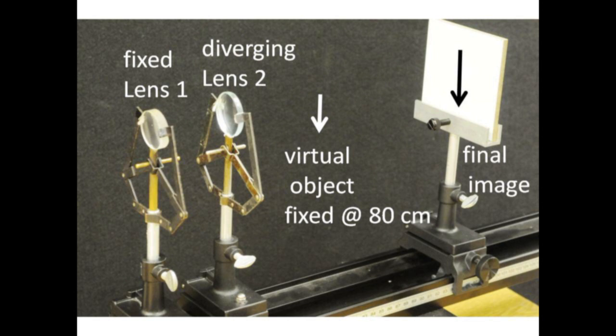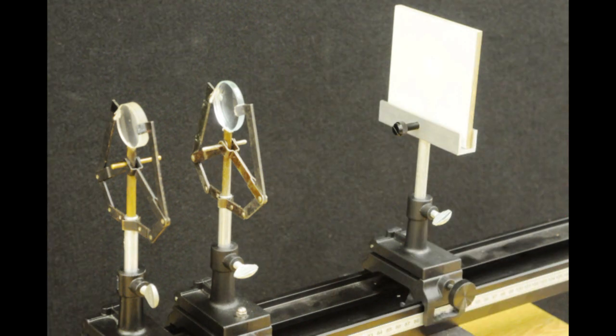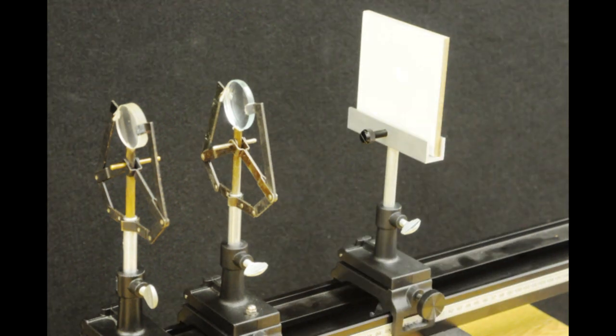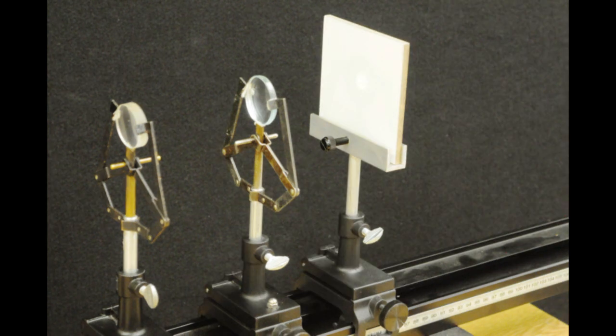The diverging lens is seeing the virtual object locked at 80 cm and pushing the final image back. 1 cm at a time, progressively move the diverging lens closer to the virtual object and continue locating the final images.